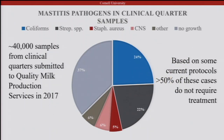We from Quality Milk Production Services are such a diagnostic lab. I want to show an example of what we see in terms of mastitis pathogens from clinical quarter samples. This represents approximately 40,000 samples from clinical quarters submitted to Quality Milk Production Services in the last year. About one third of the samples run in the diagnostic lab had no-growth results.